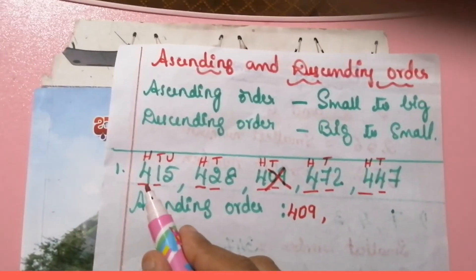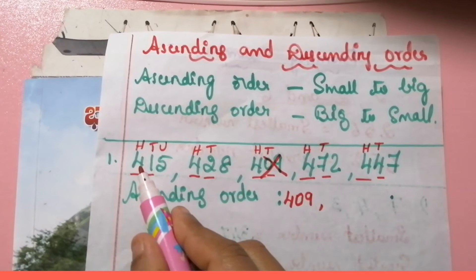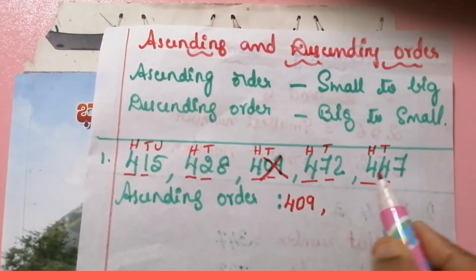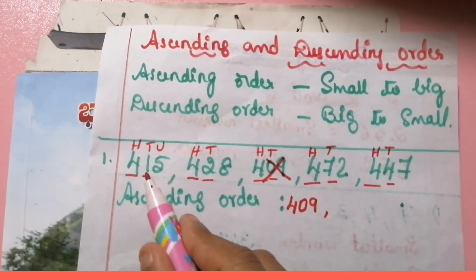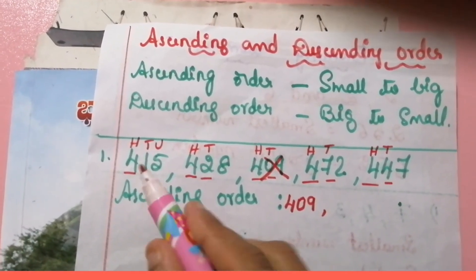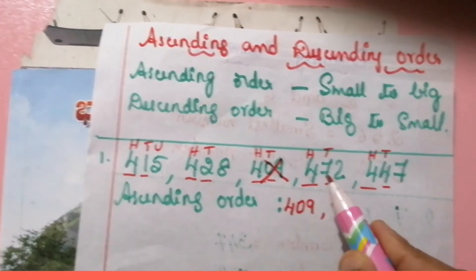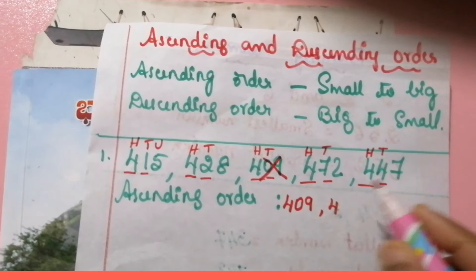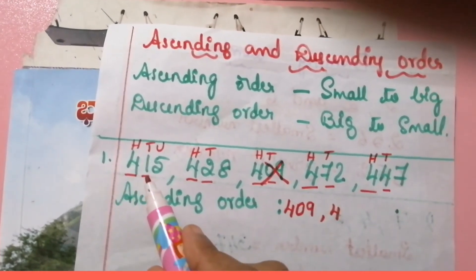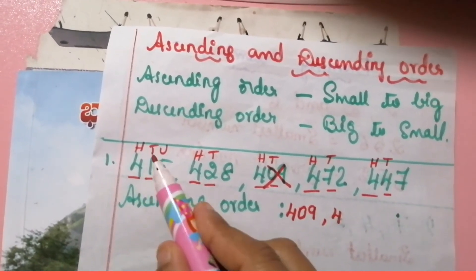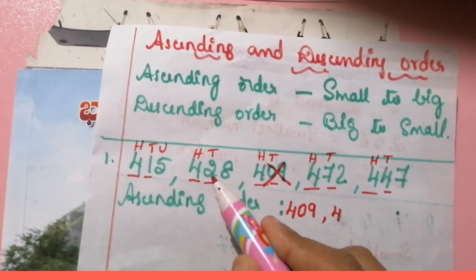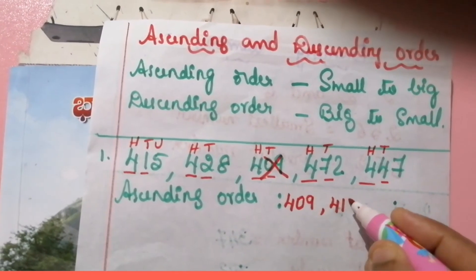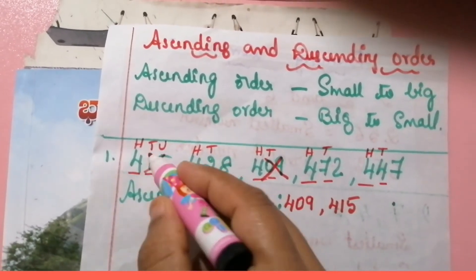We will compare the numbers in the hundreds place: four, four, four, four — same numbers. Then we will compare the tens place digits: one, two, seven, and four. One ten means ten, two tens means twenty, seventy, and forty. So four hundred and fifteen is the smallest. Then we will strike it out.